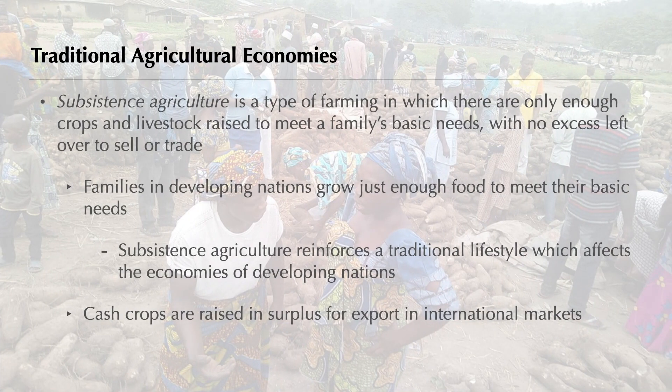Many people in developing nations still must produce their own food to survive. In subsistence agriculture, families grow just enough to meet basic needs and do not produce crop surpluses to trade. Most developing nations, however, have been able to produce surpluses of agricultural products to sell in international markets. These surpluses are usually in commercial plantation crops such as peanuts from the Gambia, coffee from Colombia and Brazil, bananas from Honduras, cocoa from Ghana and Côte d'Ivoire, and sugar from Cuba and the Dominican Republic. Generally, these crops are raised solely for export by producers who are usually wealthy landowners.